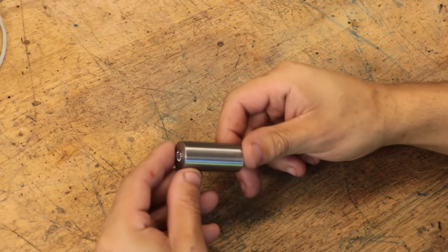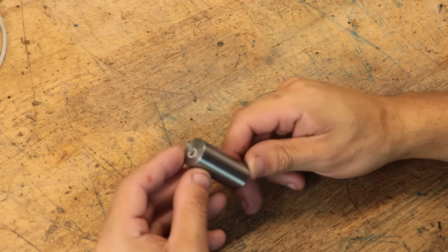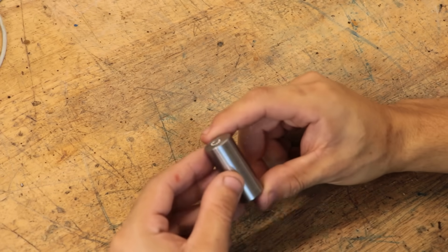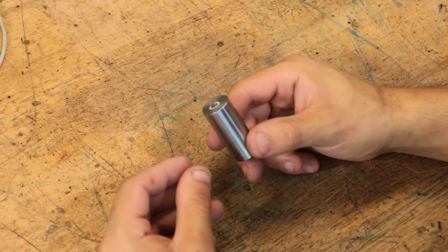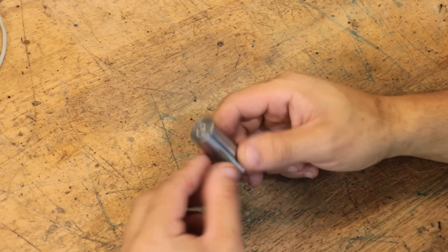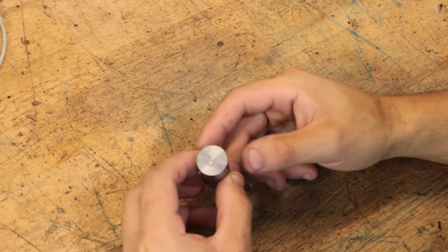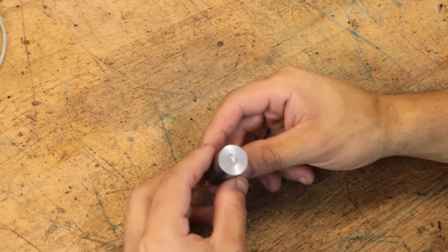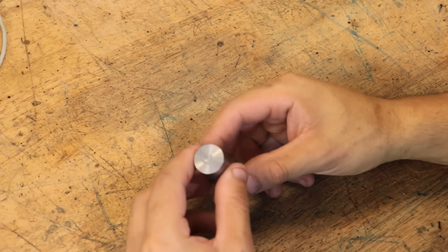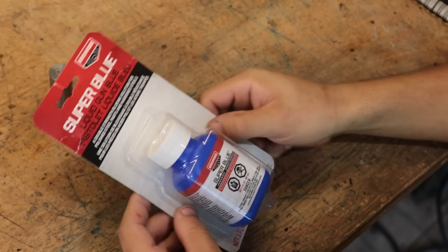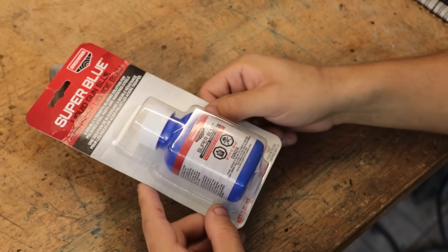Now the first method we'll look at is cold bluing, which is probably the most popular method online and the most popular for a small workshop. That's probably because it's the most straightforward method, it's probably one of the quickest, and it can be done at room temperature.